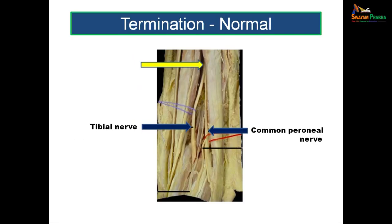The sciatic nerve terminates once it reaches the popliteal fossa. At the upper angle of the popliteal fossa, it divides into its two components: the tibial nerve, which continues down in the middle of the popliteal fossa, and the common peroneal nerve, which descends along the lateral border of the popliteal fossa. Normally, the sciatic nerve terminates at the upper angle of the popliteal fossa, at the junction of the middle and lower one-third of the thigh.